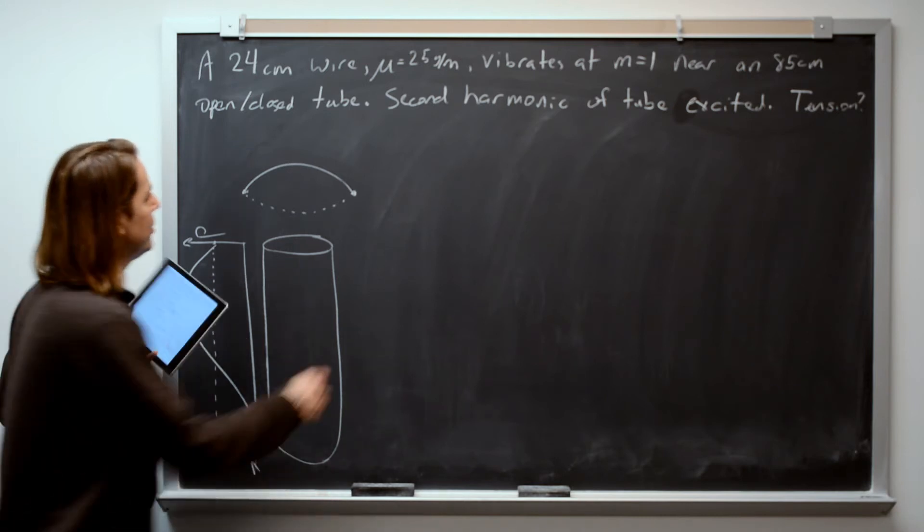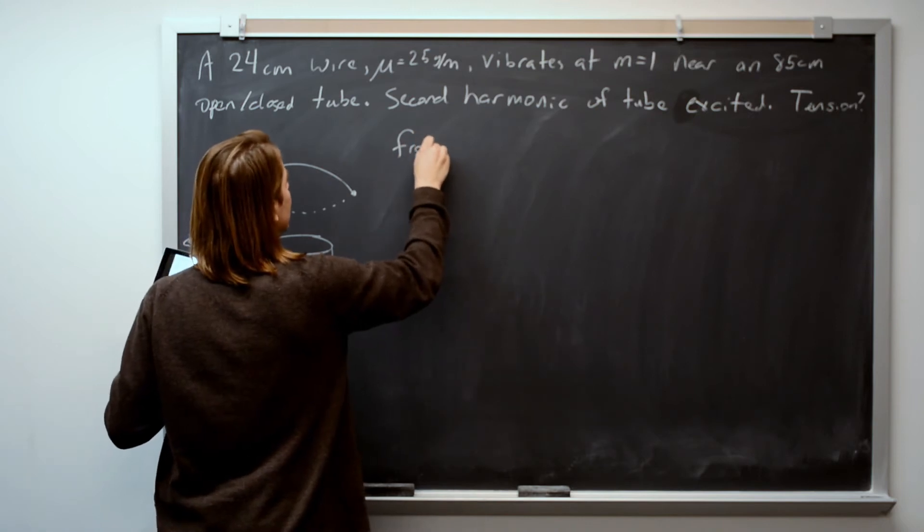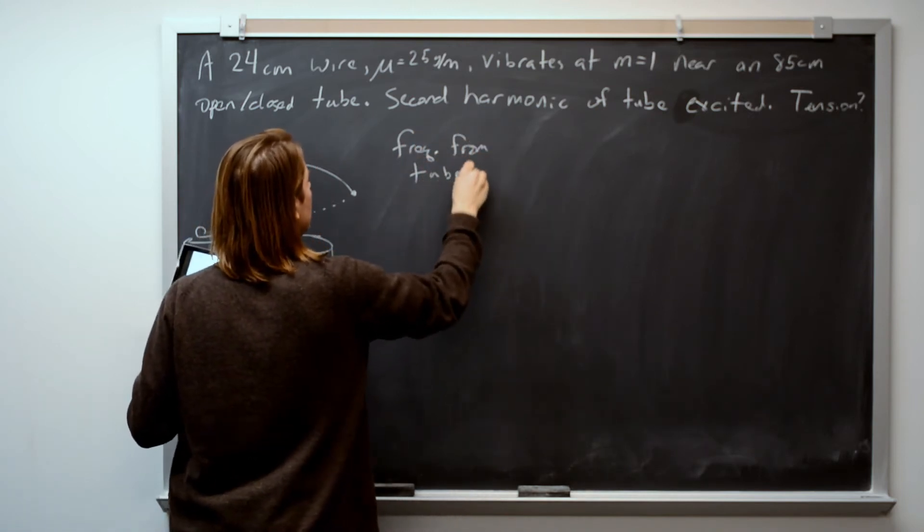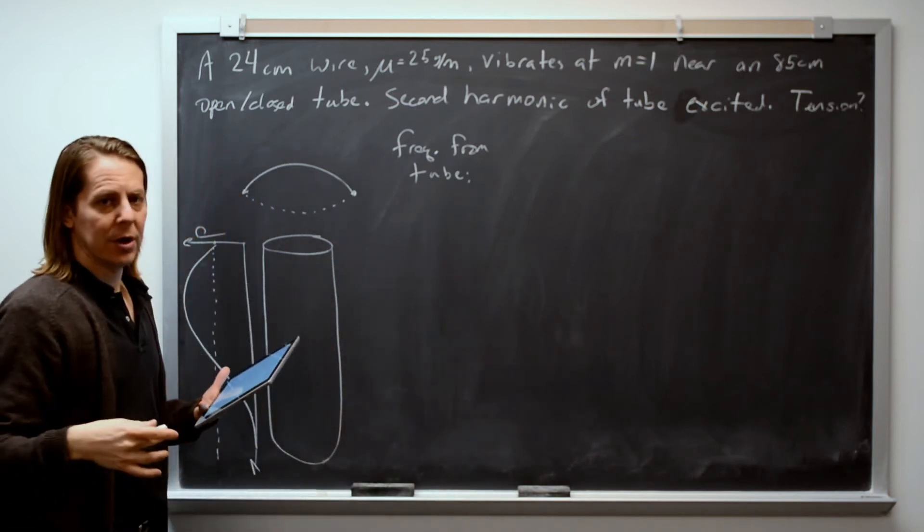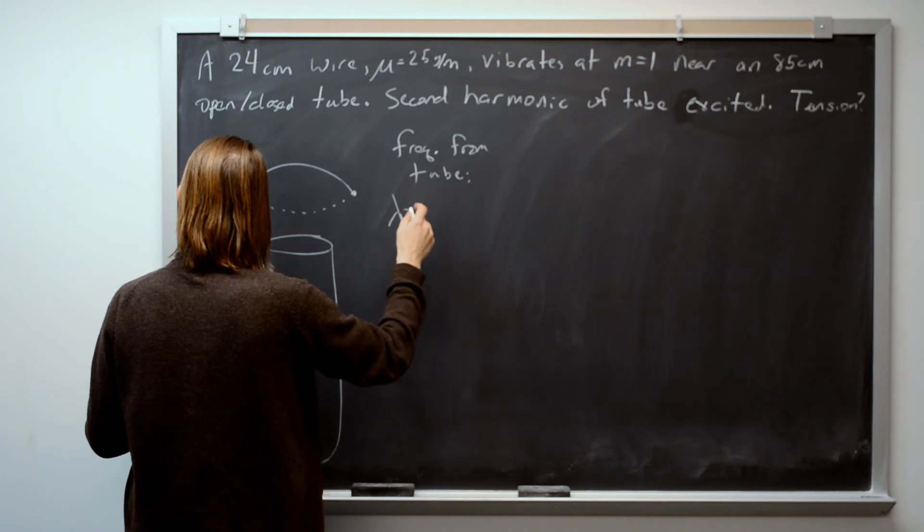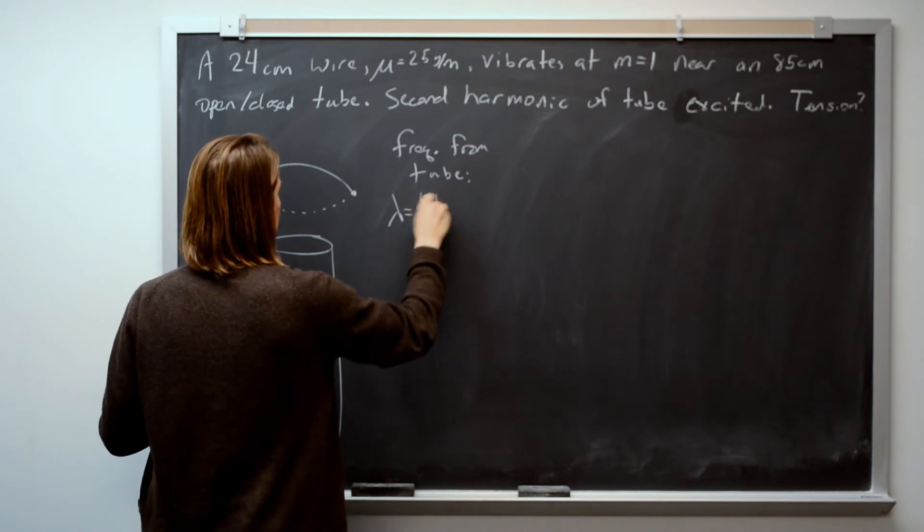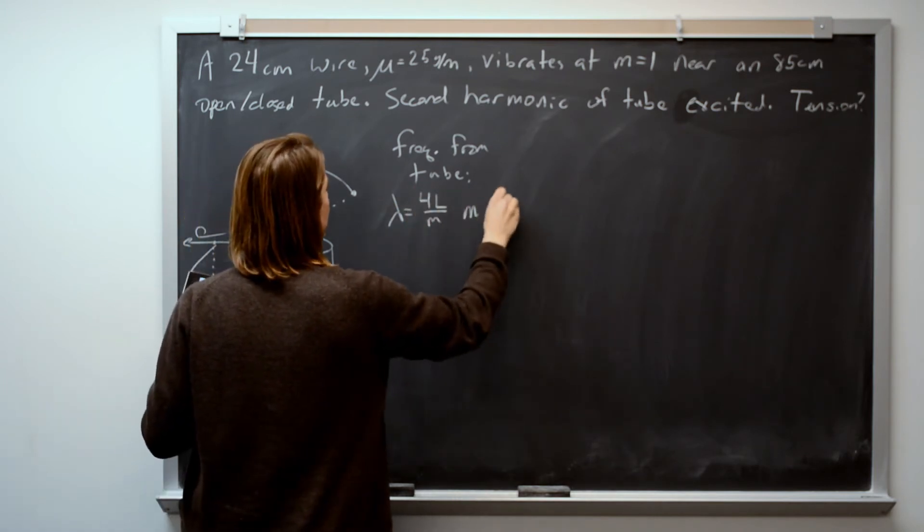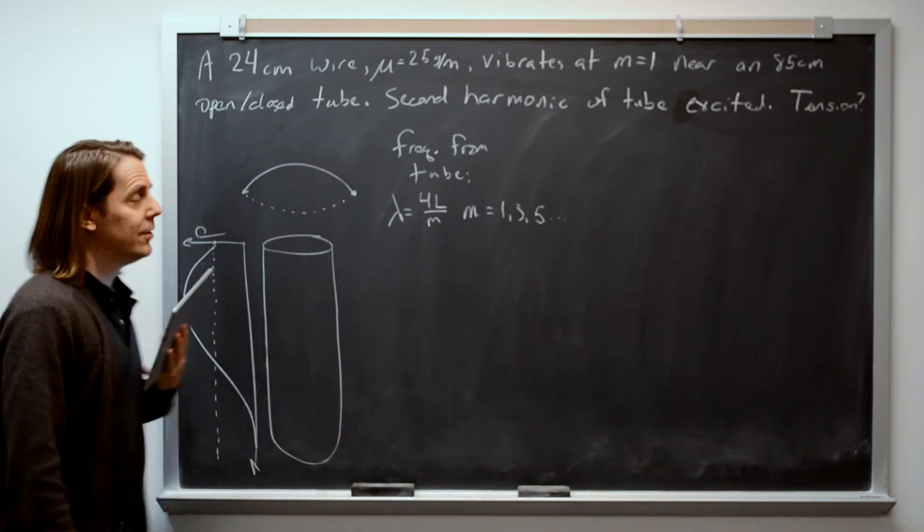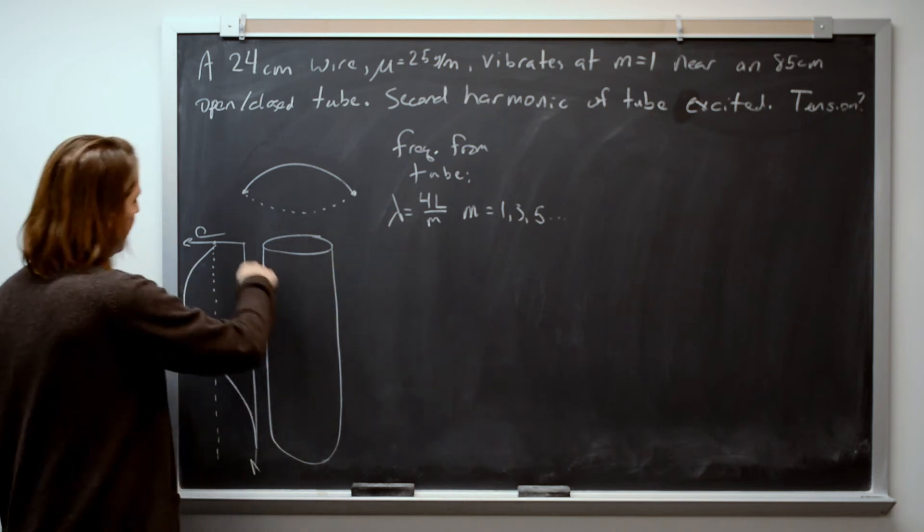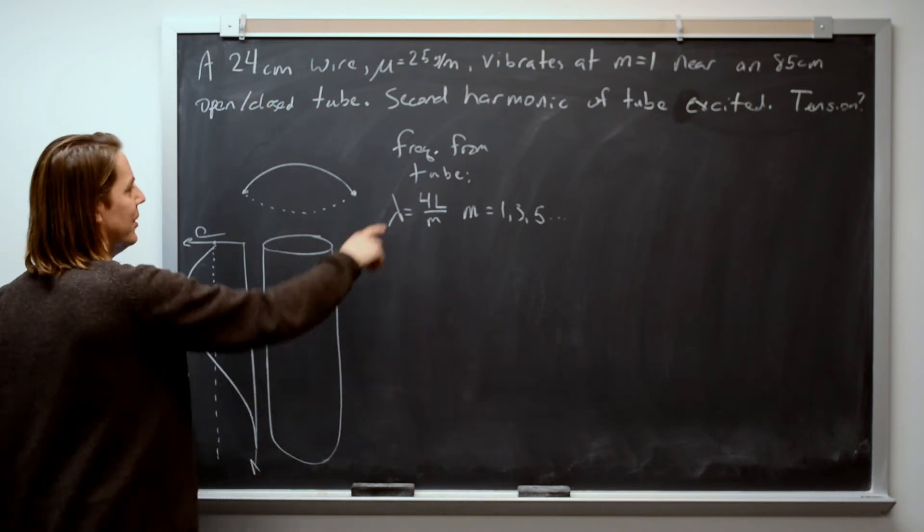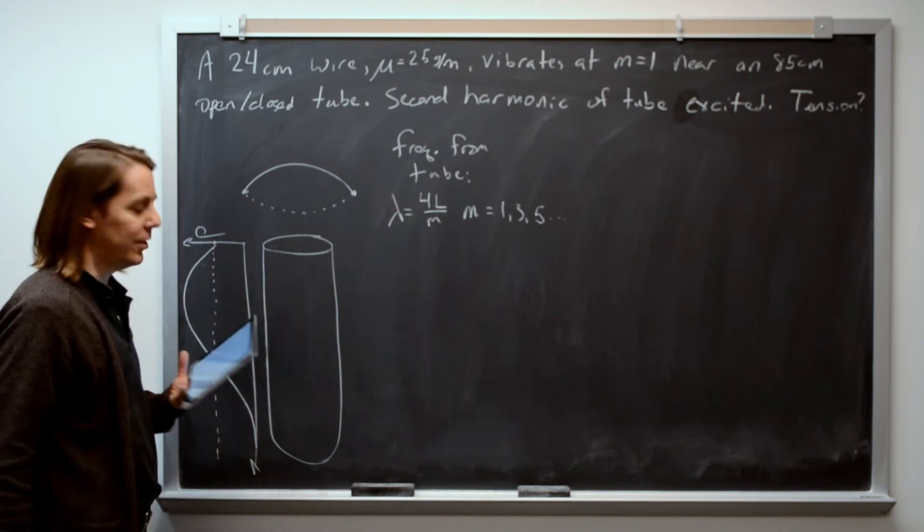If you want to calculate the frequency, let's get the frequency from that tube. We know that for an open-closed tube, the wavelength is 4L over M. 4L over M equals 1, 3, it's just the odd numbers. So the tube length is a fourth of the wavelength, that's the fundamental, but then it's 3 fourths, 5 fourths, et cetera.